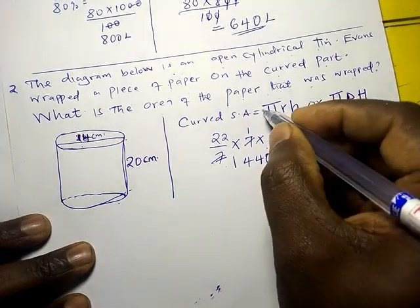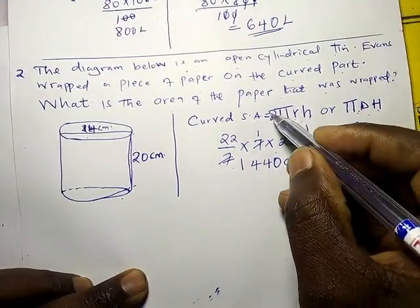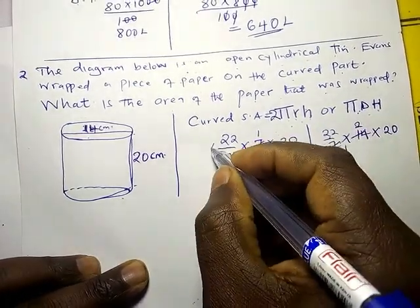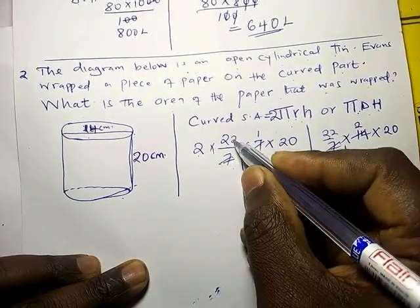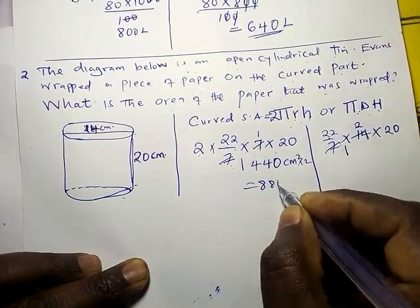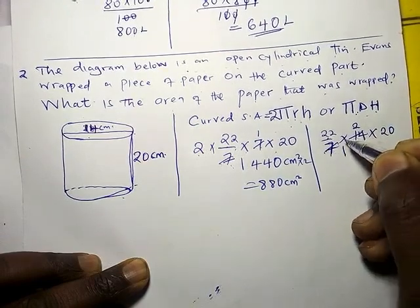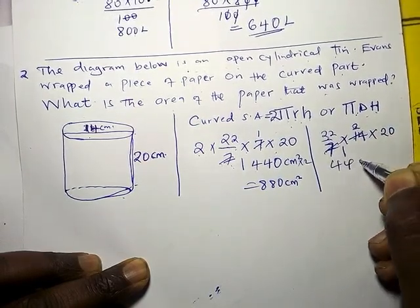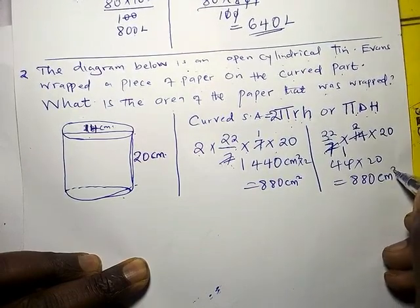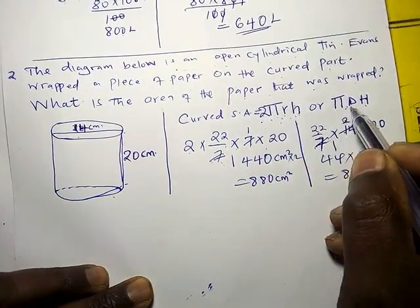The first formula is 2πrh and the second is πdh. Using 2πrh: 2 times 22 over 7 times 7 times 20. The 7s cancel, giving 2 times 22 times 20, which equals 880 centimeters squared. Using πdh: 22 over 7 times 14 times 20, the 7 goes into 14 twice giving 44 times 20, which is 880 centimeters squared. You can use either 2πrh or πdh.